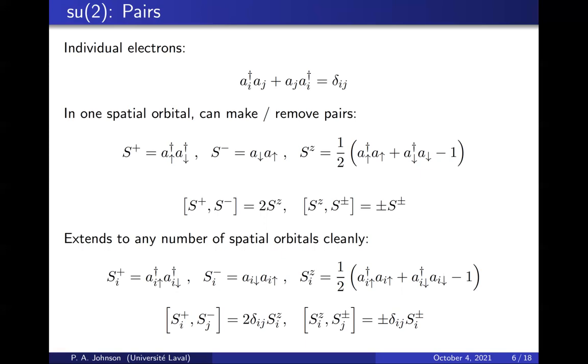This extends very easily to any number of sites. The only difference is that your commutation relations are decorated with Kronecker delta. S plus creates a pair in site i, S minus removes a pair from site i, and Sz counts the number of pairs in site i. And the structure is very easy.